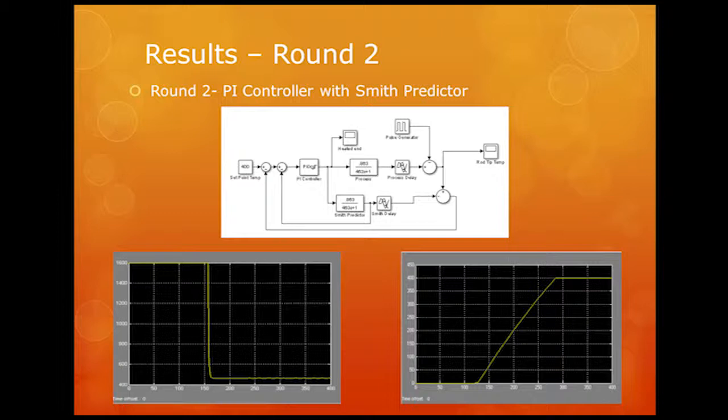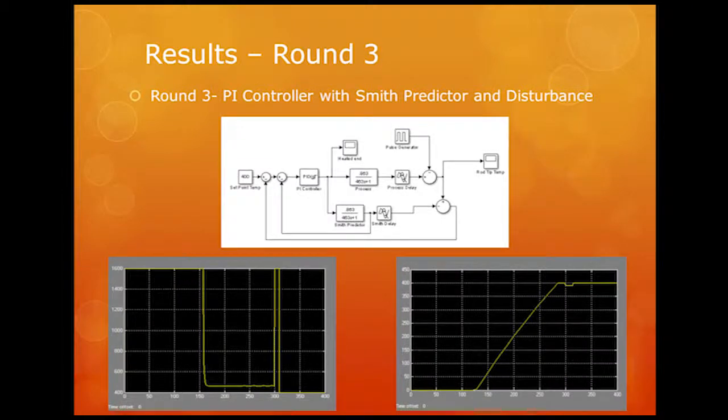We took the unlikely scenario of a step disturbance. We're going to do a simple disturbance where the tip temperature drops. In this case, it's 10 degrees Celsius. Instantaneously just drops.